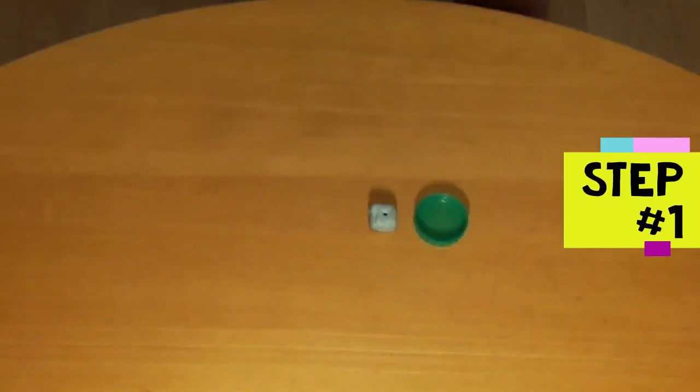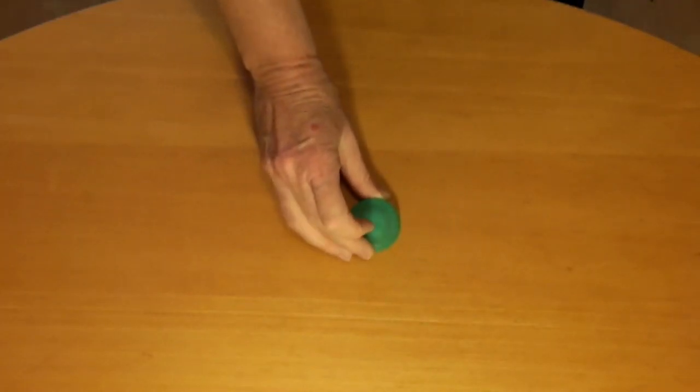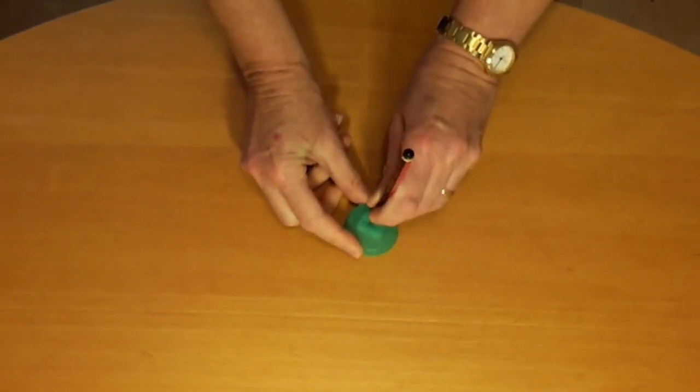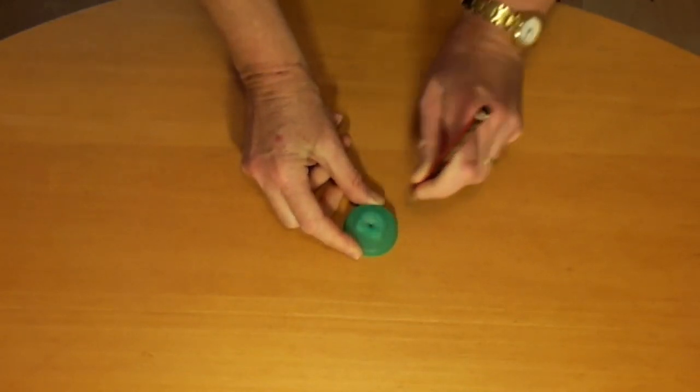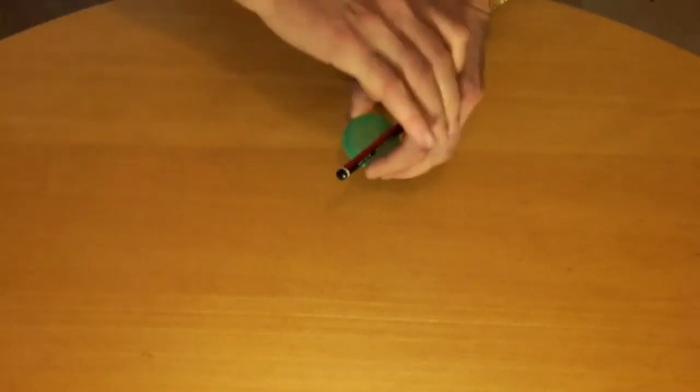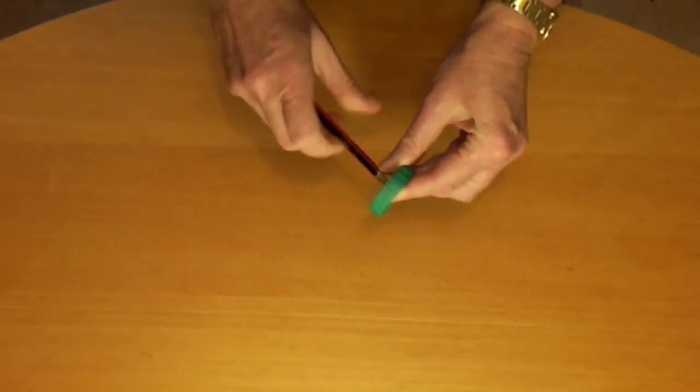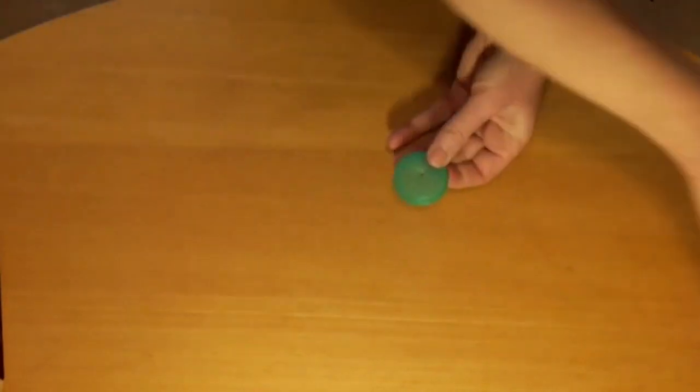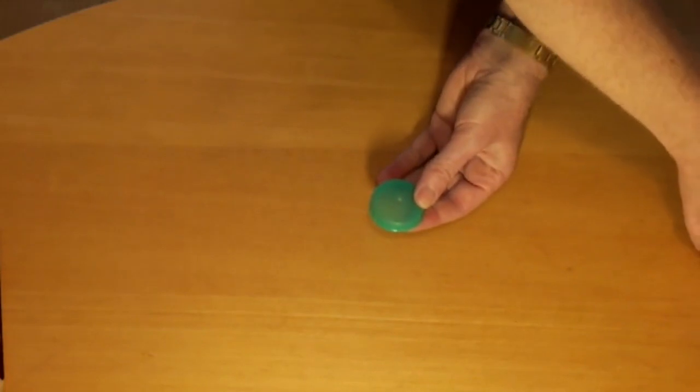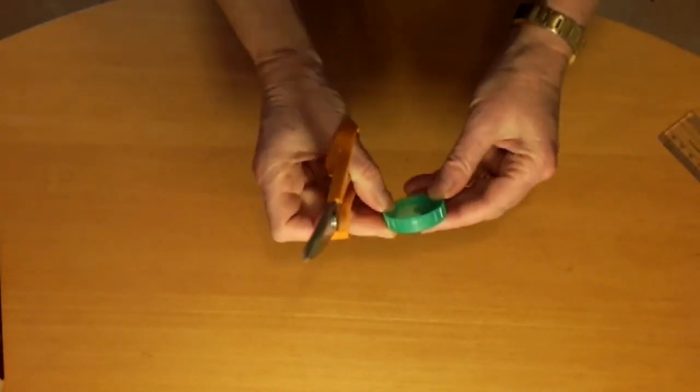Step one is to prepare the bottle lid. Place the bottle lid open end down on the blue tack. Press straight down with the pencil to make a hole in the middle. Take it off the blue tack. Open up the hole with the pencil until it's about four millimeters diameter. Cut two narrow V slots in opposite sides of the lid.